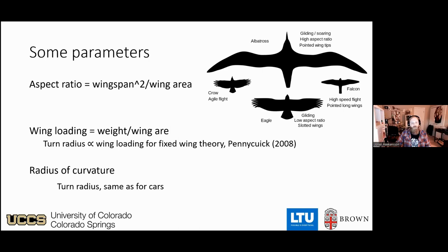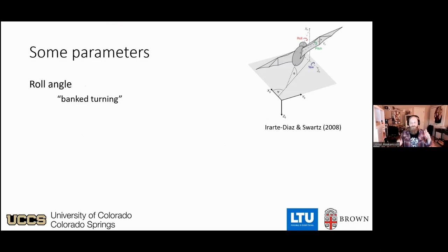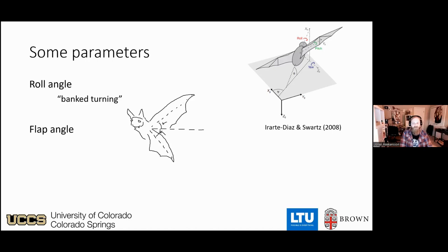Some more parameters: roll angle — the angle you achieve while performing a banked turn. When you fly forward, the wings produce a lift force directed upward. If you tilt to the side, that force vector also turns, so the force that used to point upward now points upward and to the side, providing a force for changing your direction. We'll also cover flap angle and wing extension.